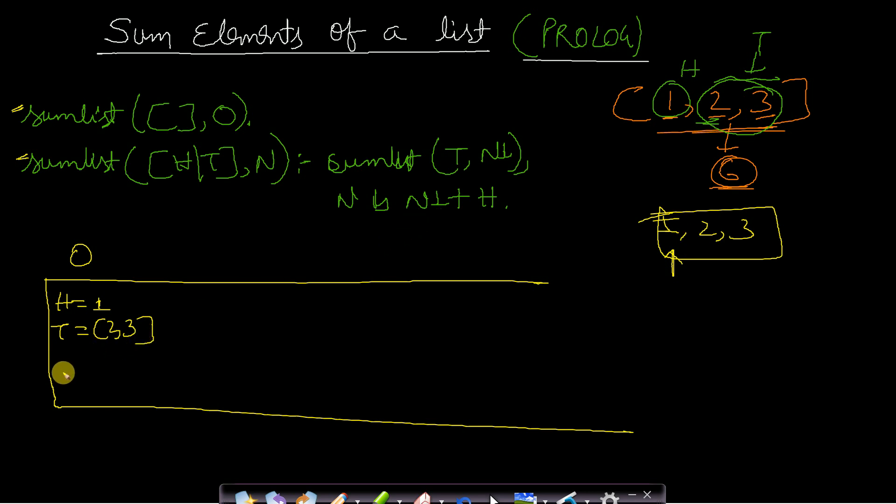What will be the sum? The sum will be stored in n. The sum will be whatever the sum of the elements of the tail is, added with the head element. I don't know what the sum of the tail will be yet. Whatever it is will be present in n1. So I will write n1 plus h, where h is head, which equals 1 here.